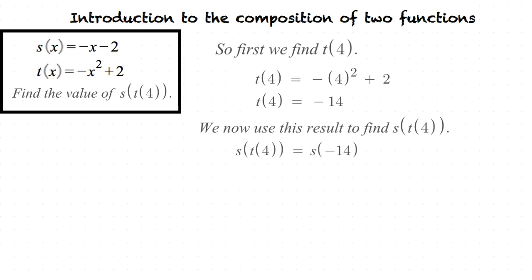Now we plug in -14 to s(x) because that is what t(4) equals. So we have s(-14) = -(-14) - 2 which simplifies to s(-14) = 12. So our final answer is going to be 12.